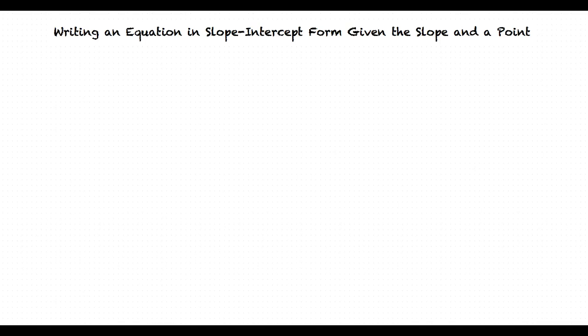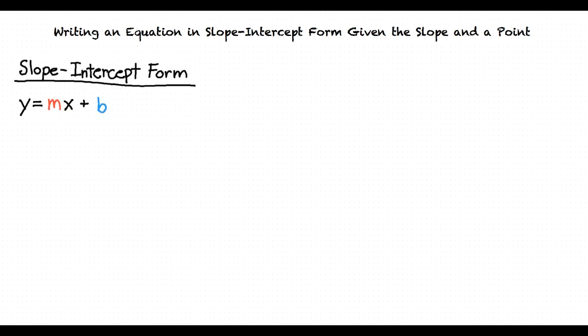This video will cover the topic: writing an equation in slope-intercept form given the slope and a point. Before we start solving problems of this type, let's review what slope-intercept form is. This is an example of what an equation in slope-intercept form would look like. The variable m in front of x is the slope of the line, and the variable b in the equation is the y-intercept.